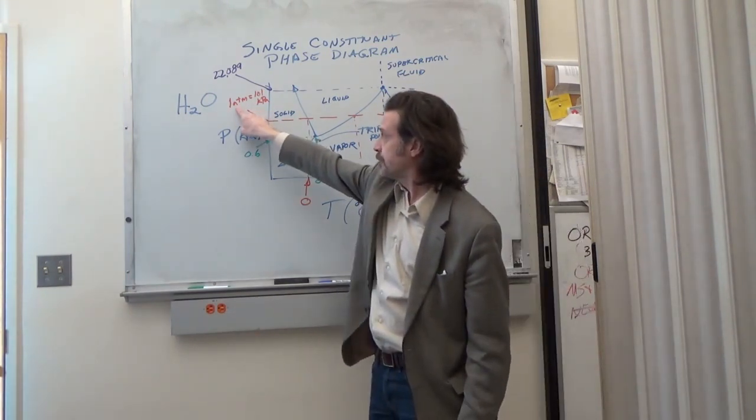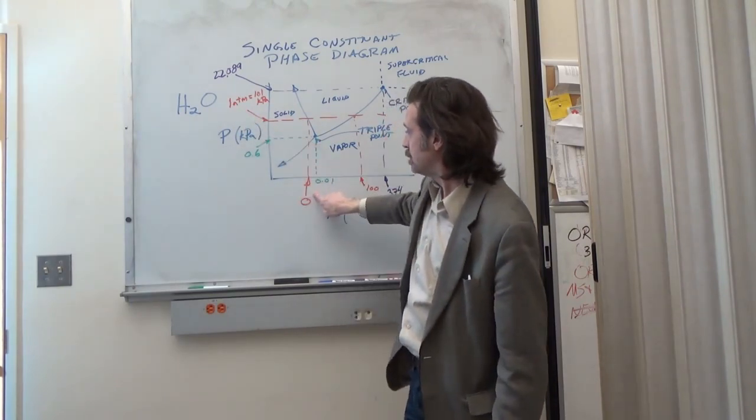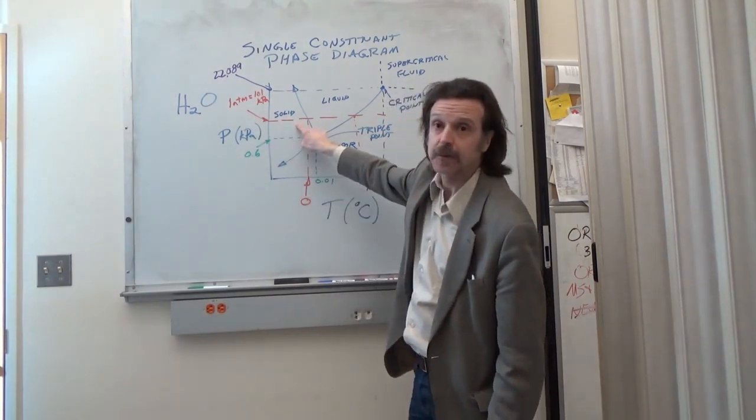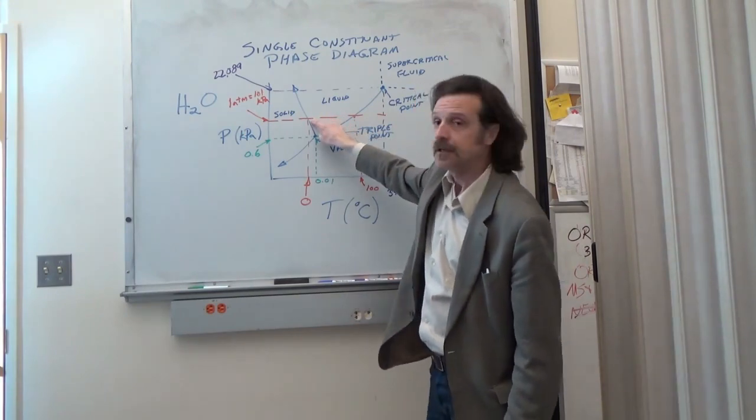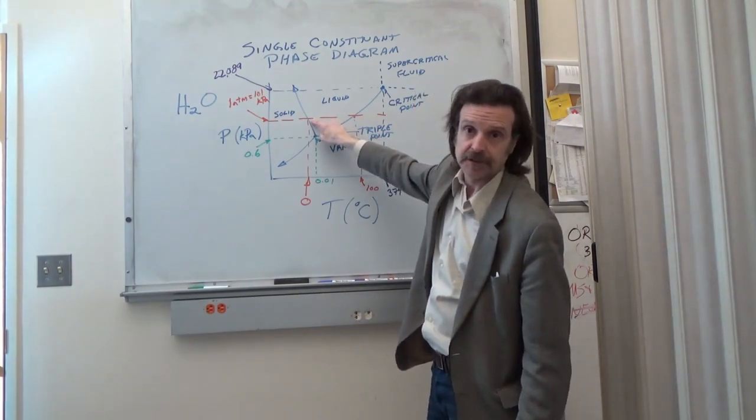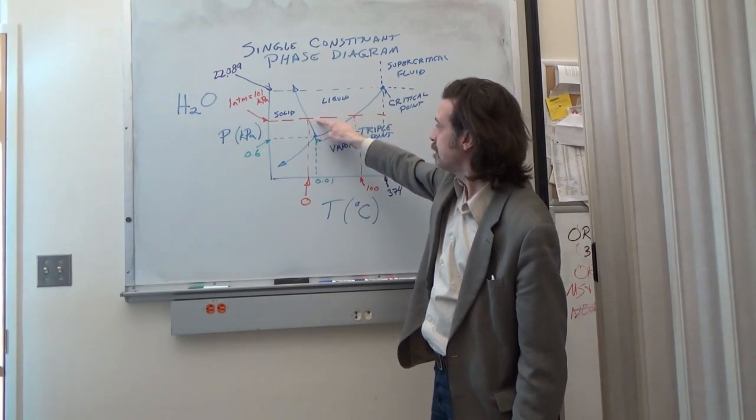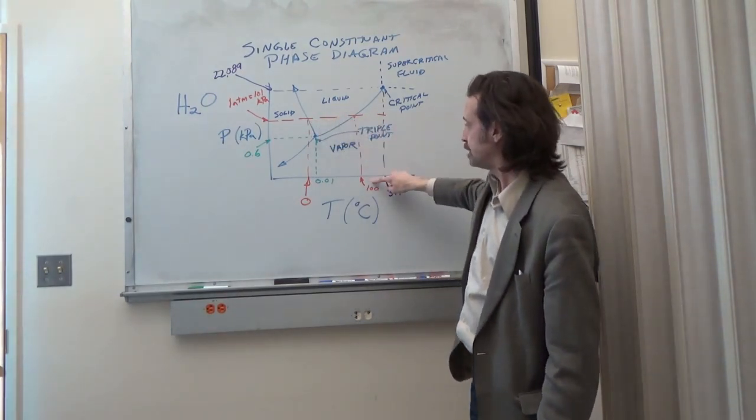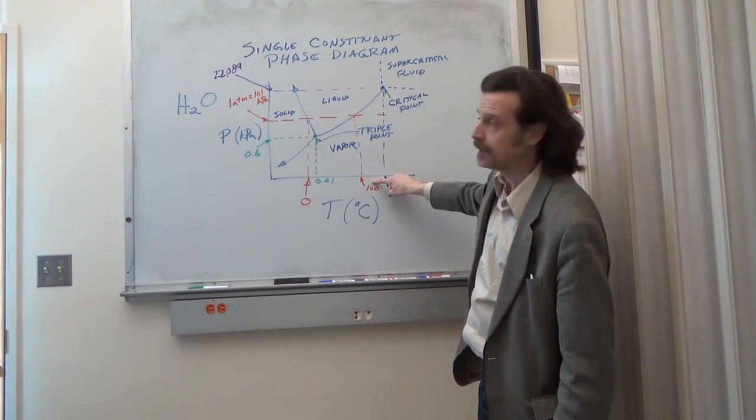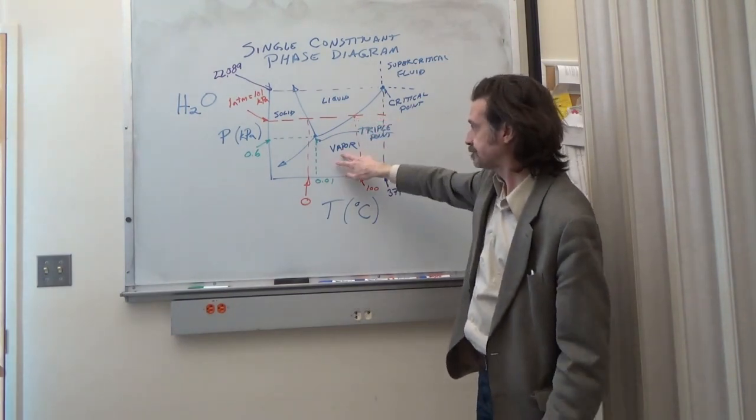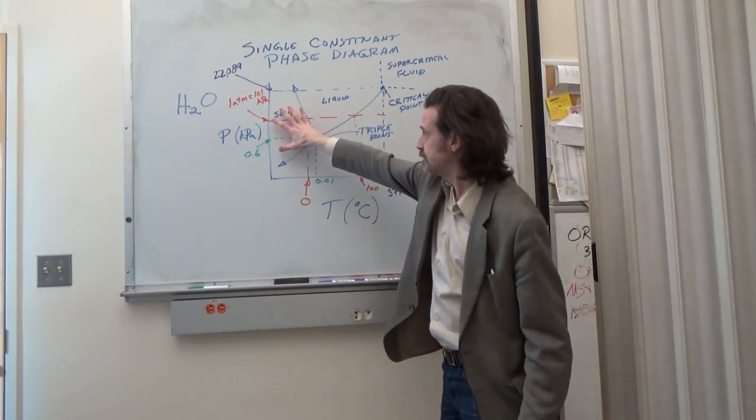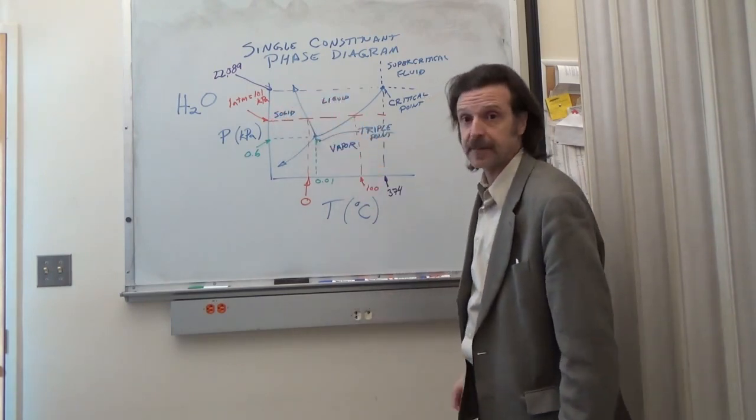At one atmosphere below zero degrees Celsius we have a solid. Right at zero degrees Celsius the solid will melt and form a liquid and it will stay as a liquid up until you get to 100 degrees Celsius and then it vaporizes and becomes a gas. So we have these three regions: solid, liquid, and vapor.